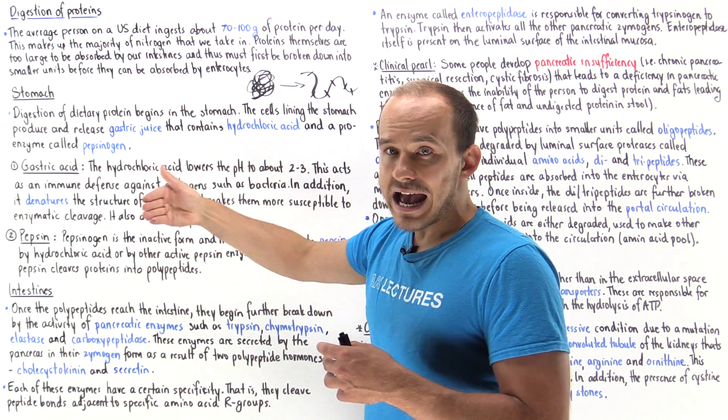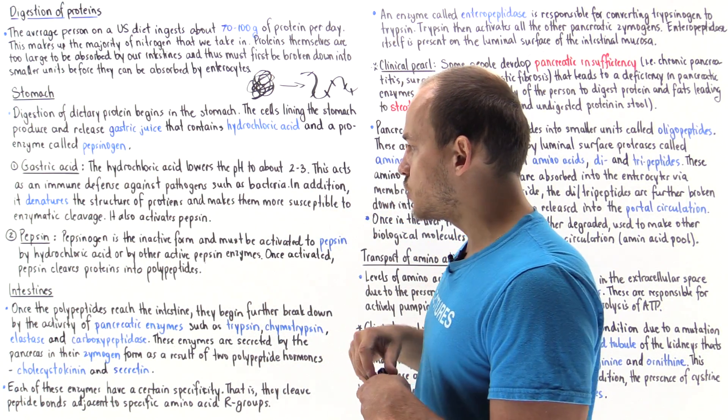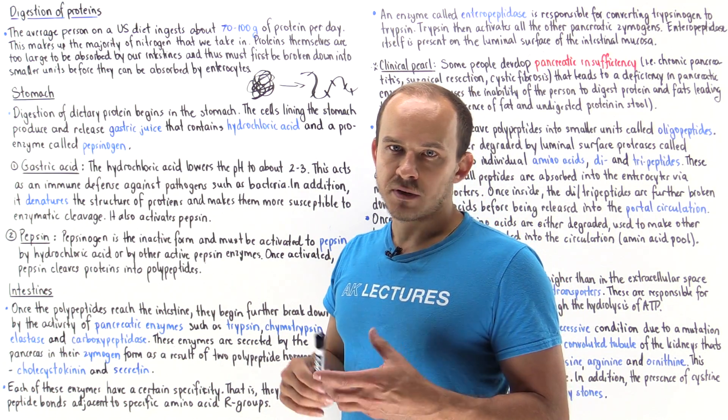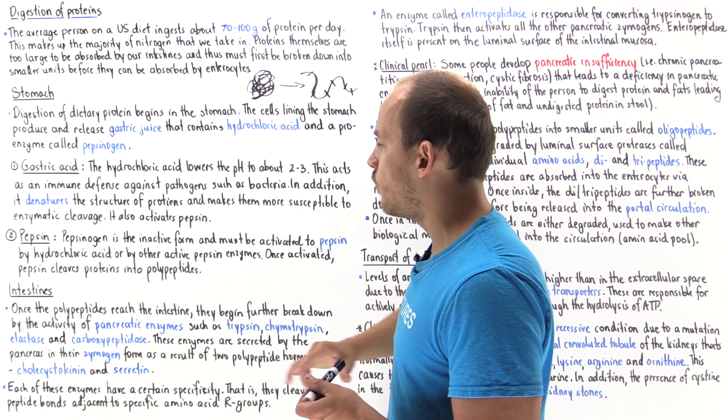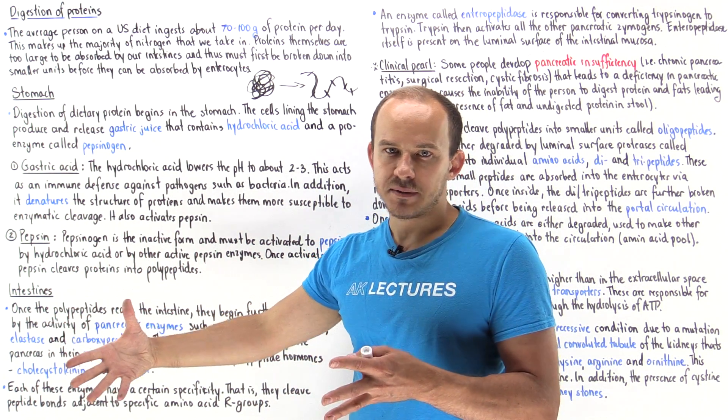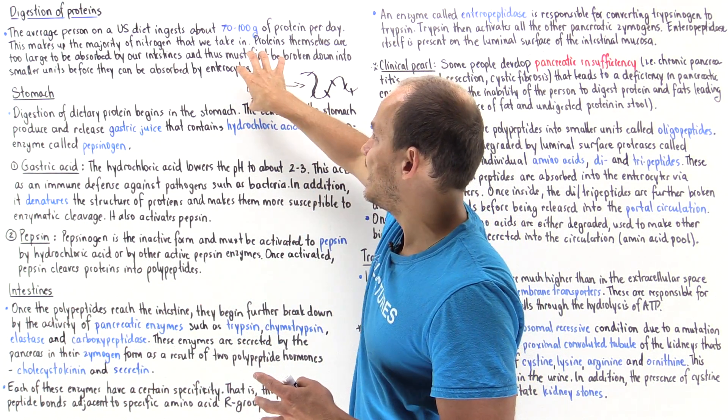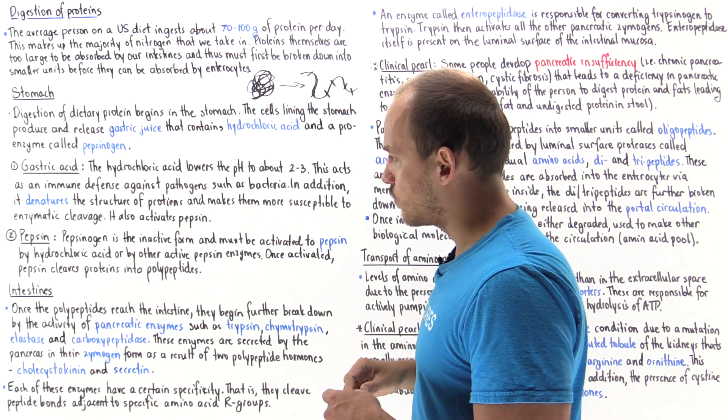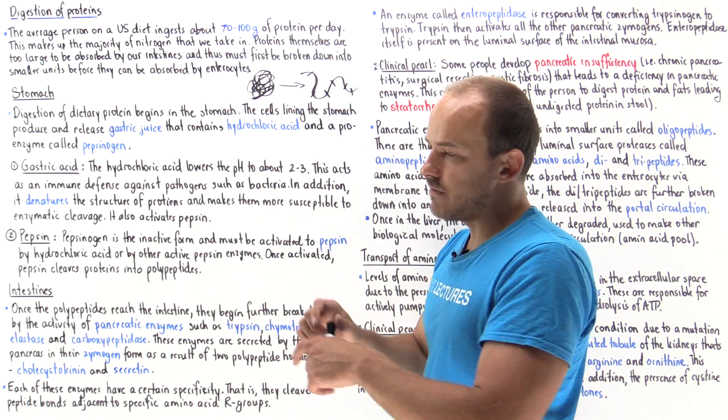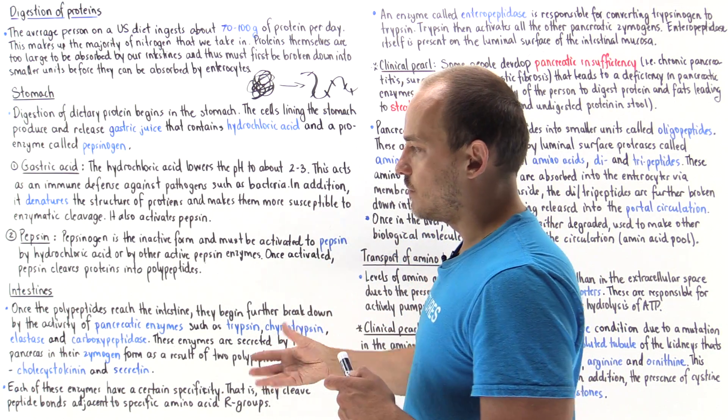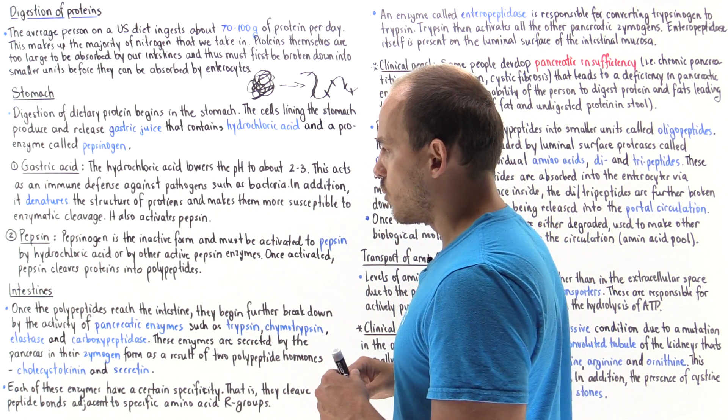In addition, other active pepsin molecules can also convert pepsinogen into pepsin. But either way, once we form pepsin, pepsin begins to cleave some of these bonds to form smaller polypeptides, smaller than that initial large structure of the protein. All of this gets mixed in and then eventually empties out into the duodenum, into the first compartment of the small intestine.